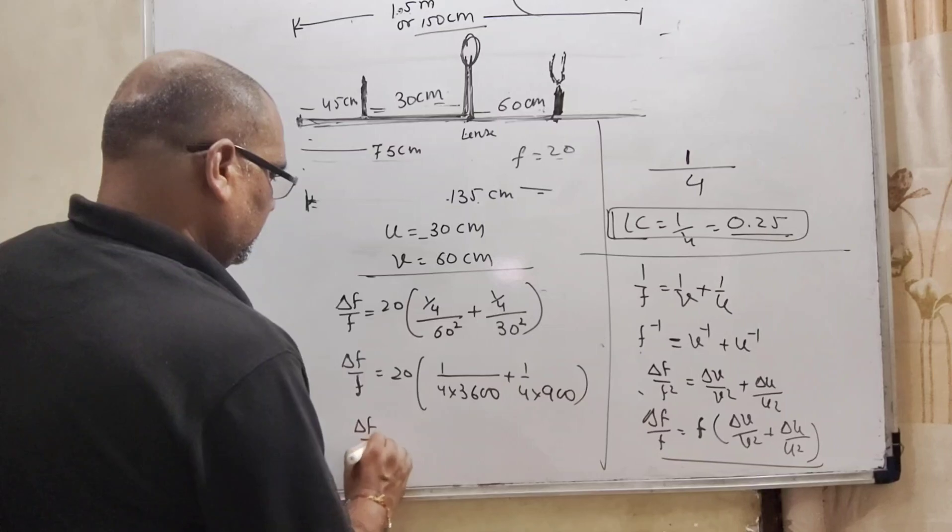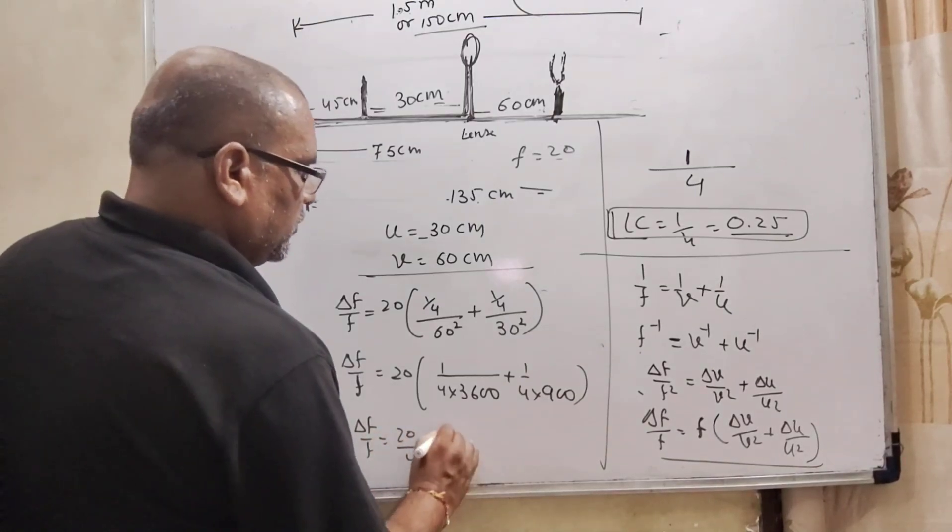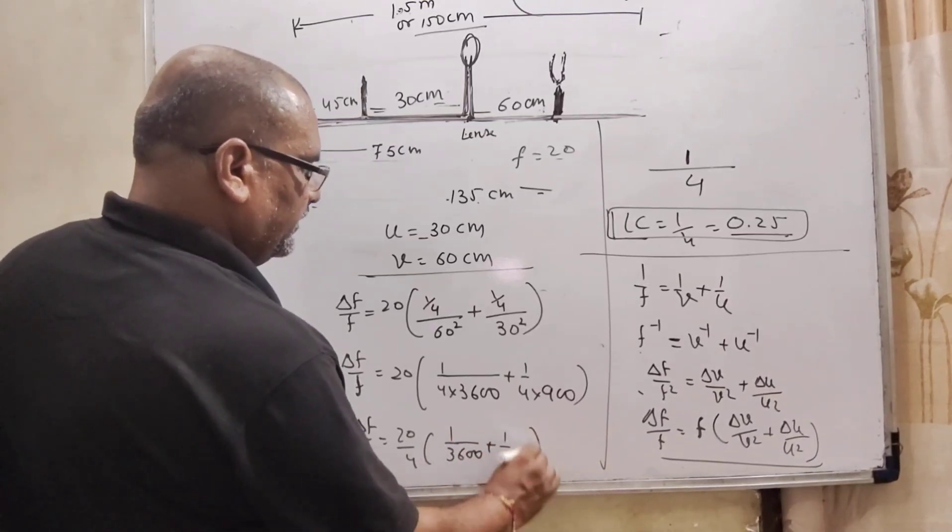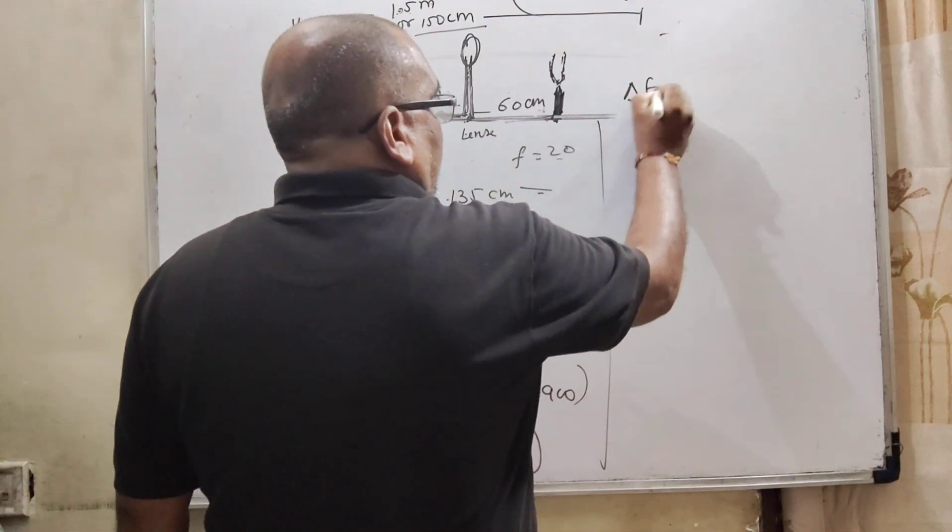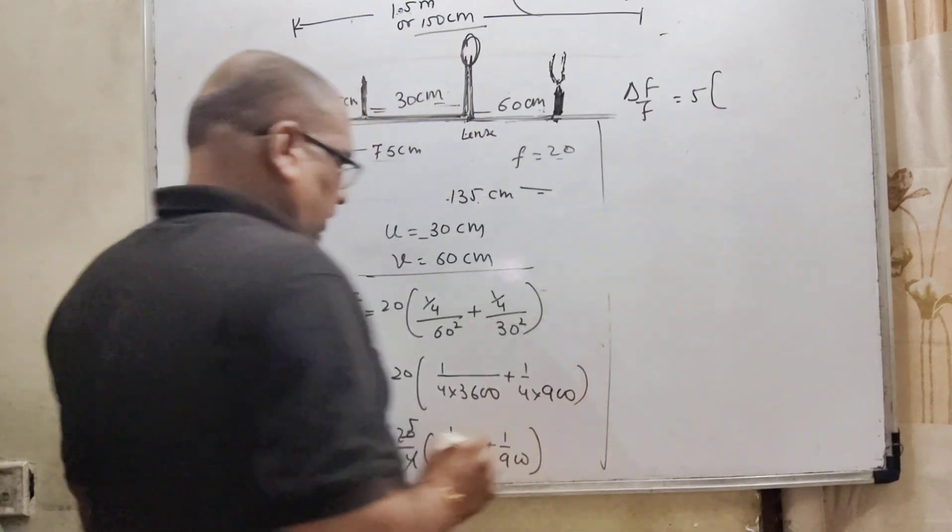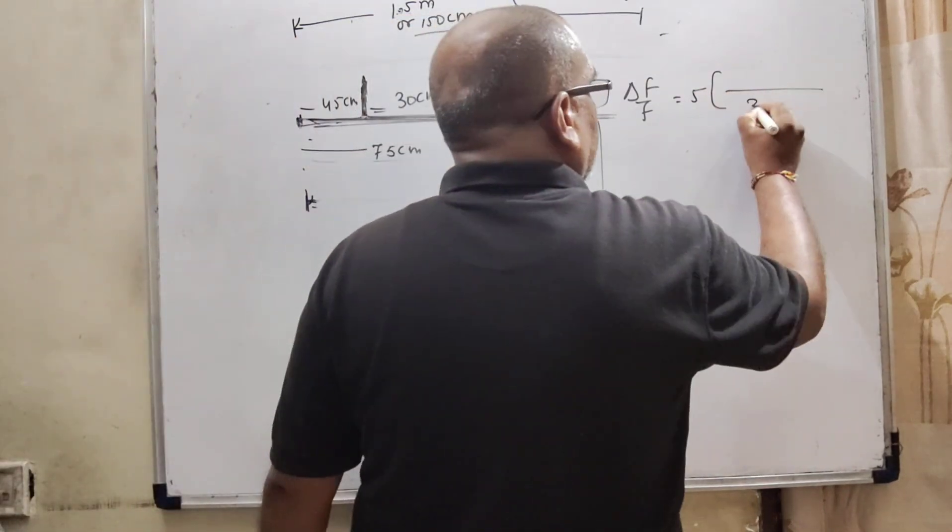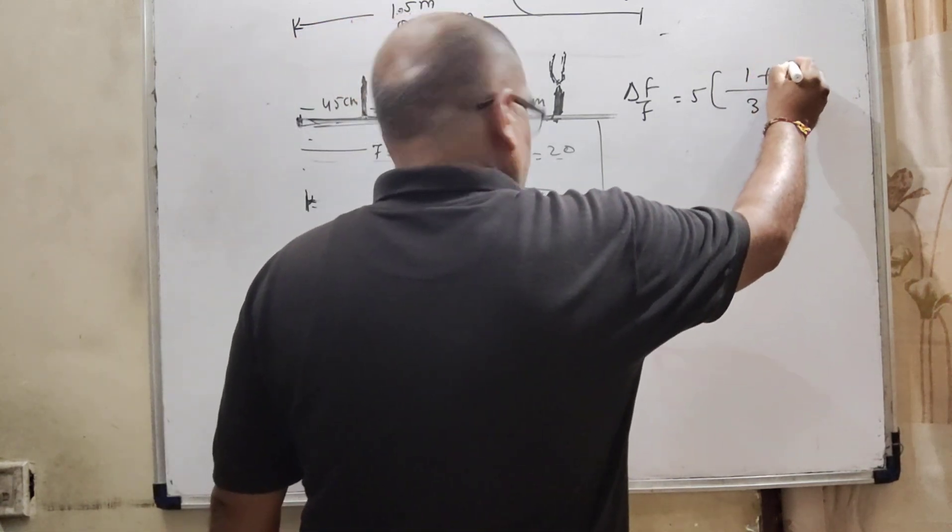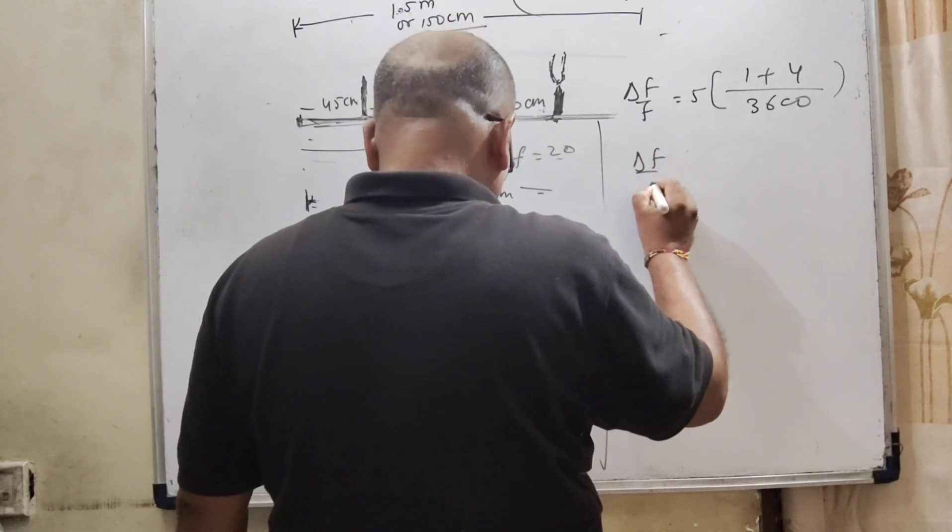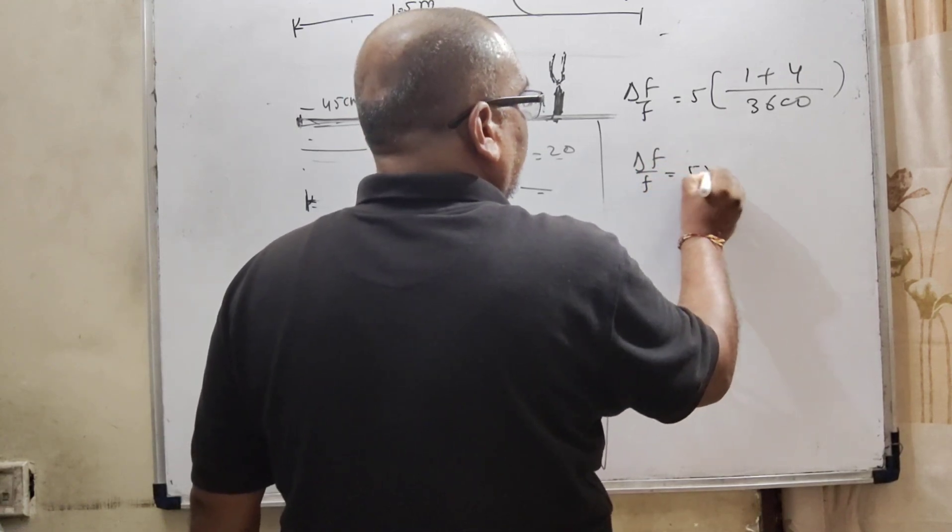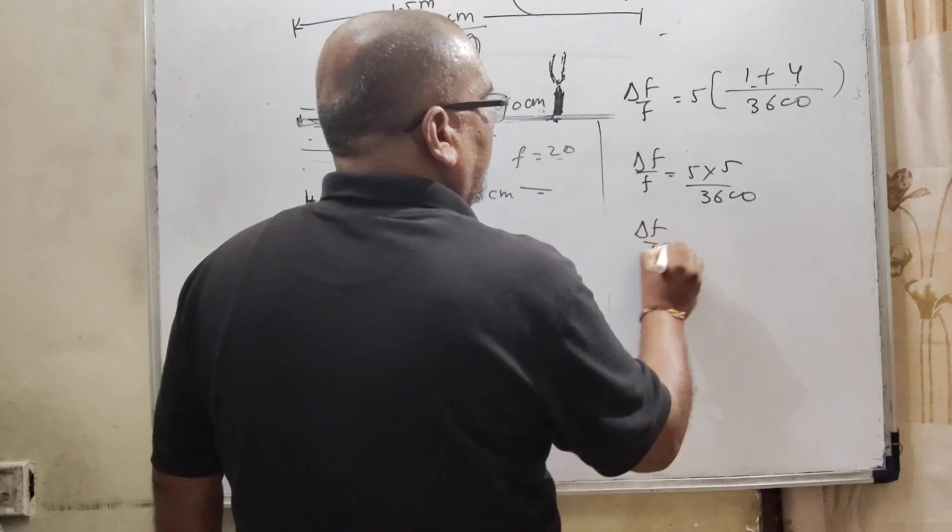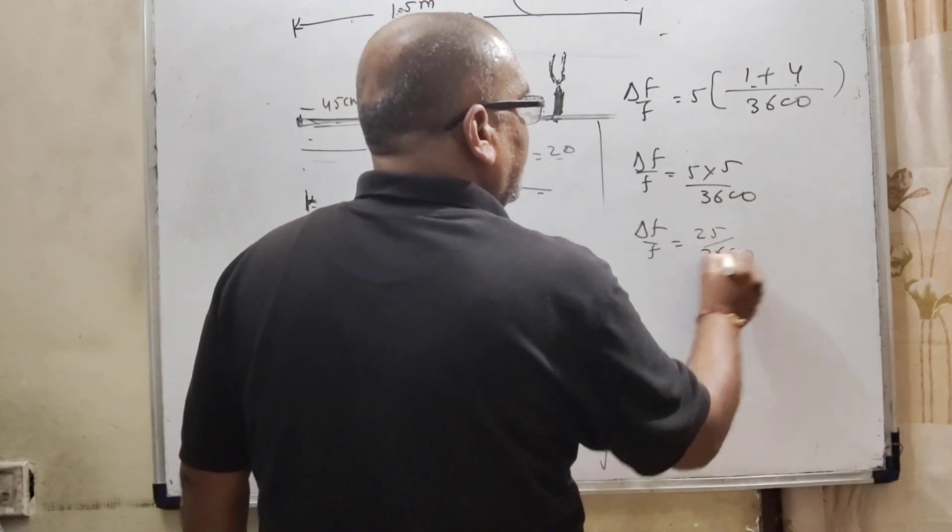1 by 4 and 900 get common. So, 1 by 3600 and 900. 1 by 4 get common. So, 1 by 3600, 1 by 900, this is 3,600, and this is 4. Delta f upon f is equal to 5. This is 5 by 3,600. Delta f upon f is 25 upon 3600.